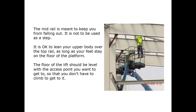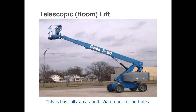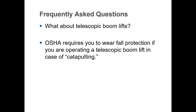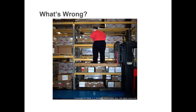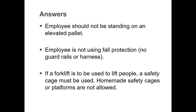The floor of the lift should be level with your access point so you don't need to climb over to transfer. It is okay to lean your upper body over the top rail as long as your feet stay on the platform floor. Boom lifts act essentially as a catapult — hitting a pothole can eject you from the basket, which is why fall protection and tie-off are required on boom lifts. Never lift workers on forks without an approved safety cage — it must be manufacturer-approved. Homemade safety cages are not allowed.